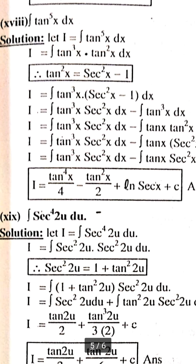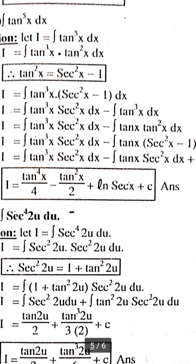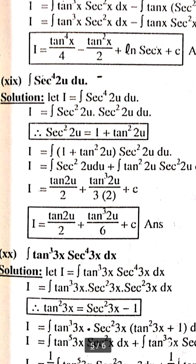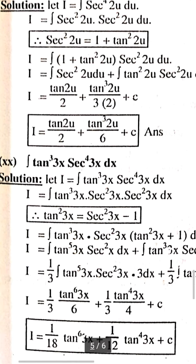Number 8 (tan⁵x): integration of tan⁵x dx. We write tan⁵x = tan³x · tan²x, and use the identity tan²x = sec²x − 1. After substitution and multiplying through, we apply the known integration formula: ∫tan x dx and ∫sec⁴x dx, using the identity sec²x = 1 + tan²x.